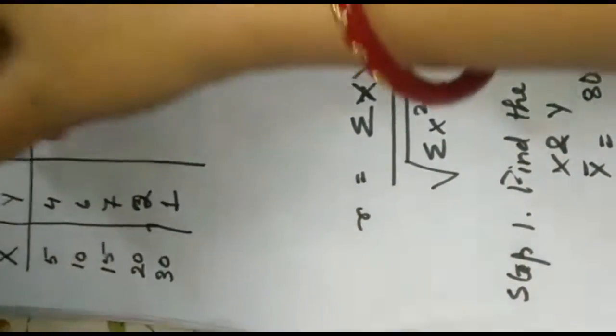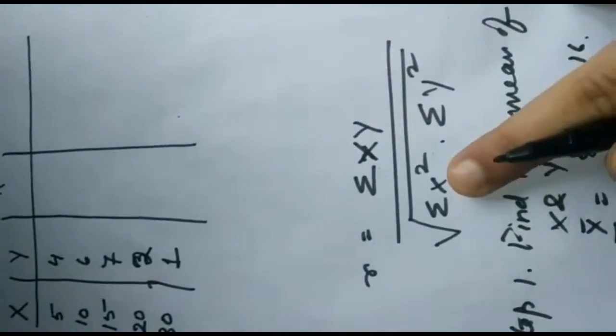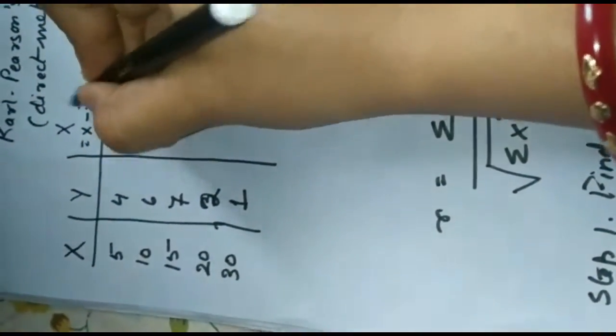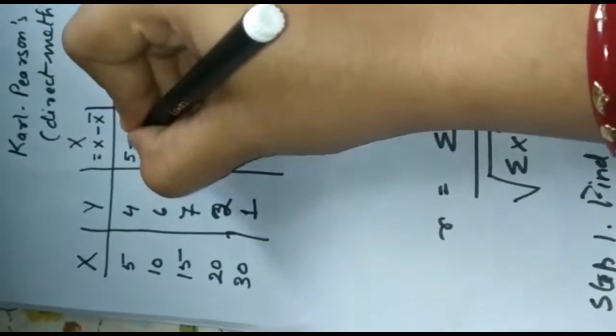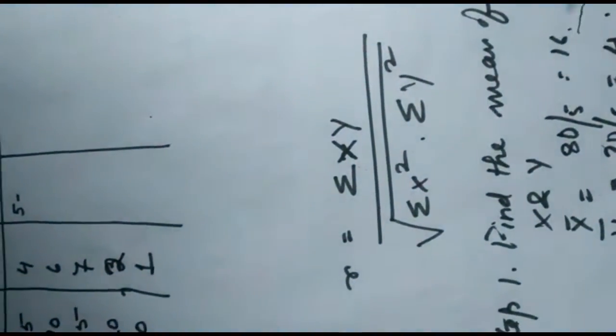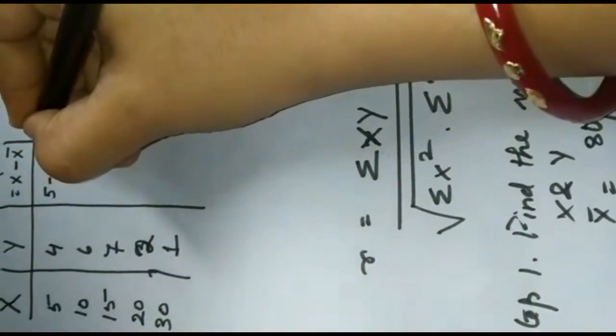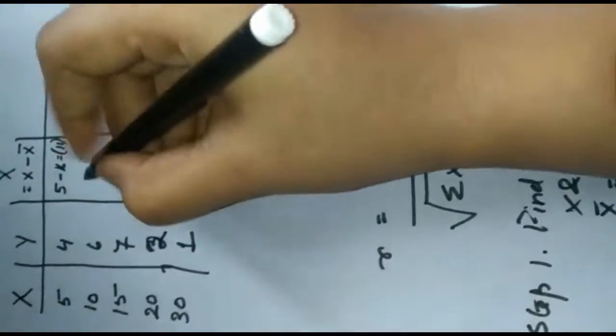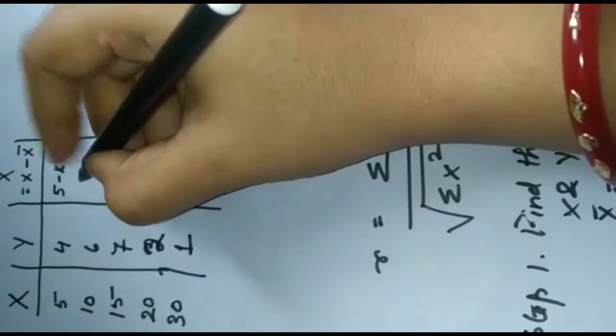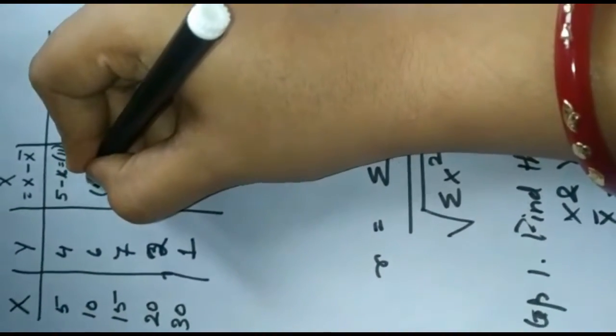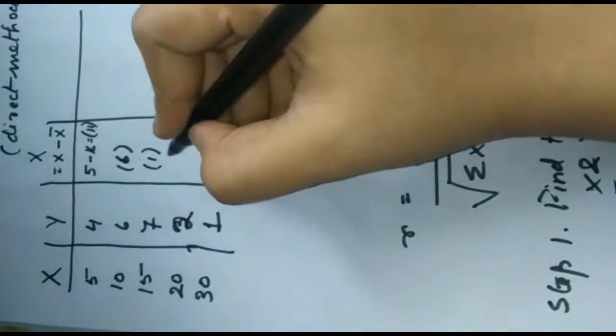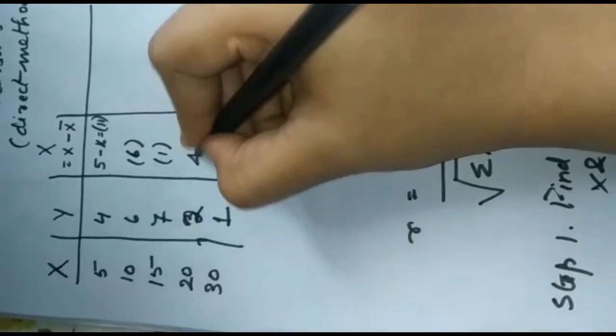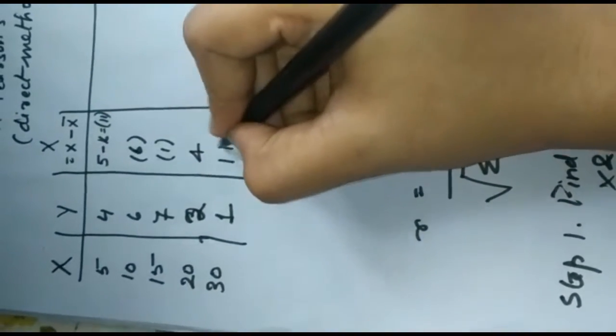Now we have actual x, that means x minus x bar. So it is 5 minus 16 which equals minus 11. In the same way, 10 minus 16 equals minus 6, then 15 minus 16 equals minus 1, then 20 minus 16 equals 4, then 30 minus 16 equals 14.